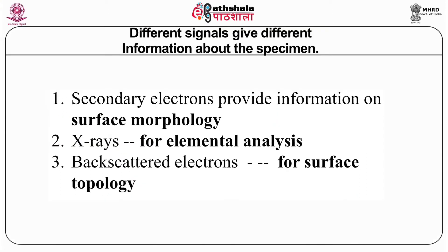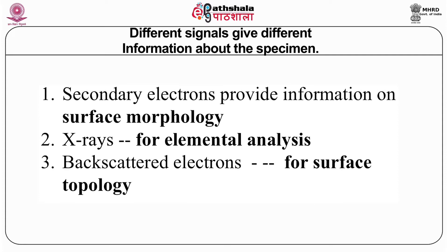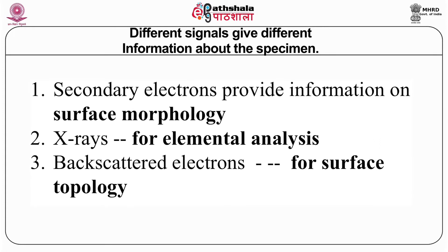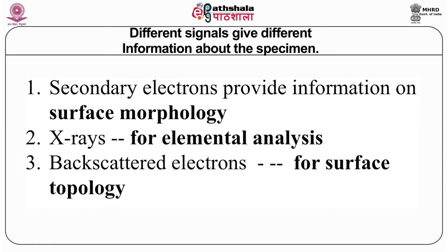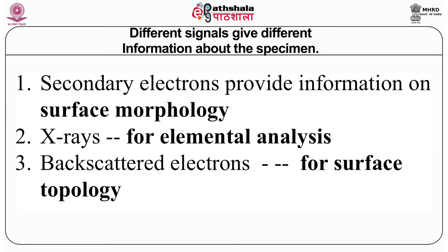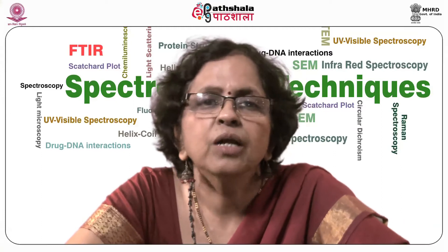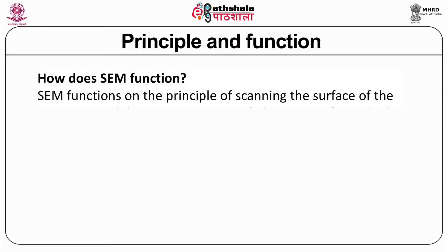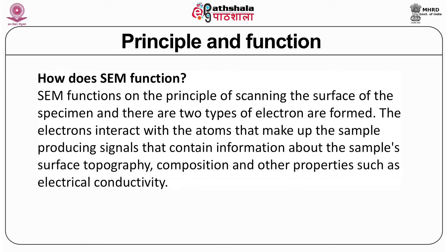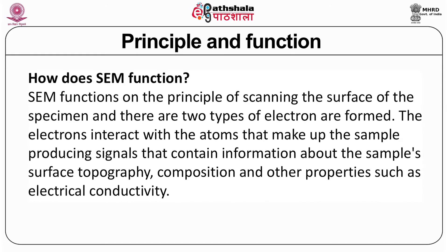Different signals give different information. Secondary electrons give the surface morphology, as in SEM. X-rays can be used for elemental analysis, which I will cover at the end after studying the whole SEM. Backscattered electrons also give surface topology in a more detailed fashion, not 2D but a 3D picture. The SEM functions on the principle of scanning the surface of the specimen; electrons interact with the atoms making up the sample to produce signals giving information about the sample's surface topography, composition, and properties such as electrical conductivity.